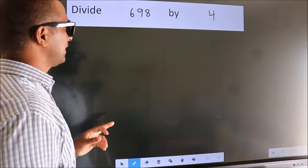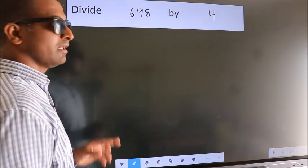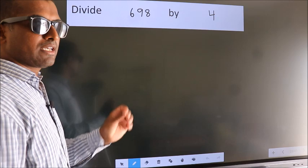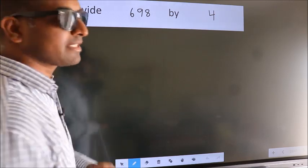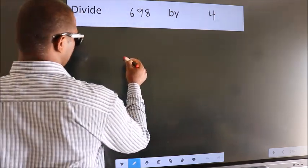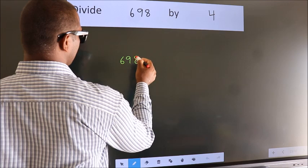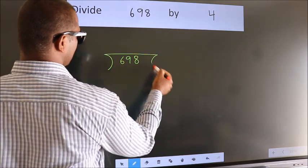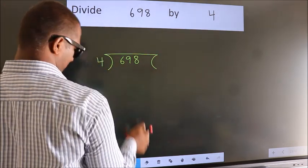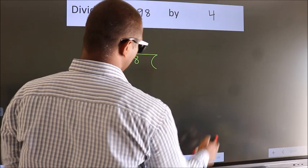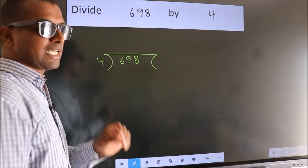Divide 698 by 4. To do this division, we should frame it in this way. 698 here, 4 here. This is your step 1.